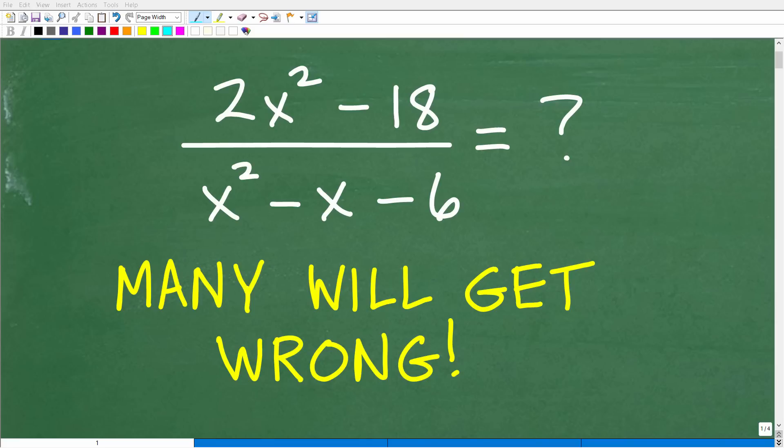Okay, so a lot of people are not going to be able to simplify this expression right here because they have not yet mastered this critical skill that you need to know in order to be successful in algebra. But let's see how well you do with this problem. The problem is the following: 2x squared minus 18 over x squared minus x minus 6. And what we want to do here is simplify this rational expression.